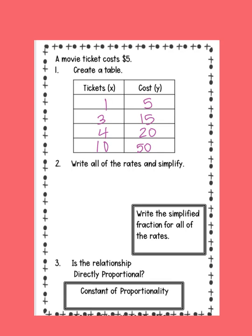So write all of these rates and simplify. So if I wrote it as a rate, I would say like 5 over 1. Well, that just equals 5. 15 over 3, that equals 5. 20 over 4, that equals 5. 50 over 10, that equals 5.